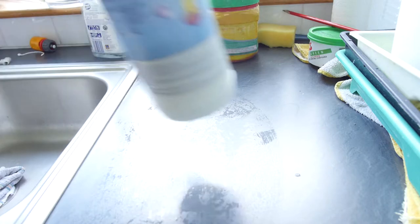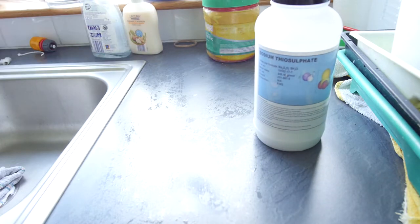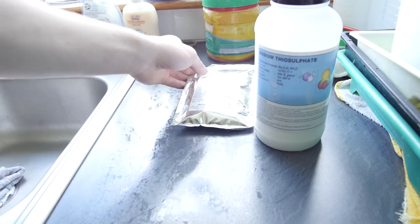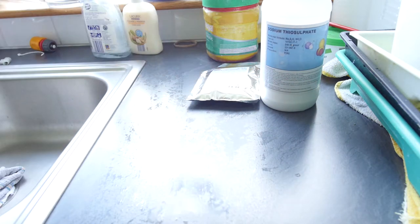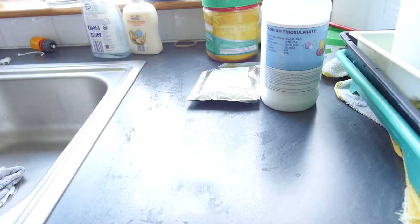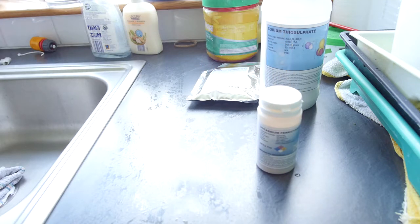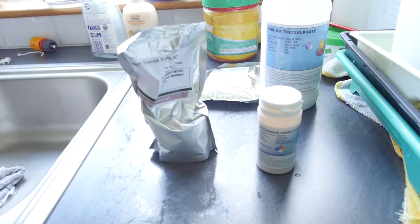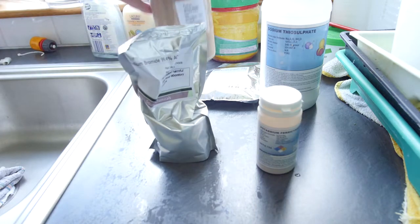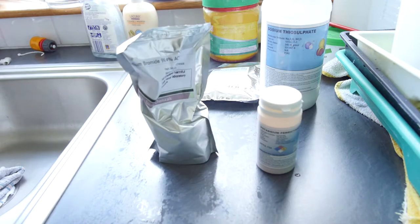For this you will need sodium thiosulfate and potassium metabisulfite to make the fixer. To make the bleach you will need potassium ferricyanide and sodium bromide, and with these you will be able to make up over 2 liters of each solution.